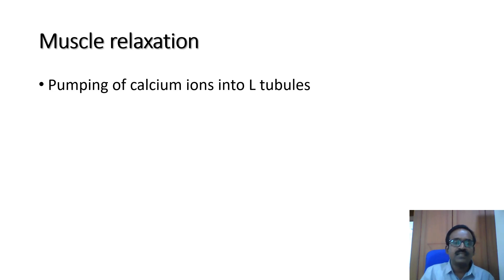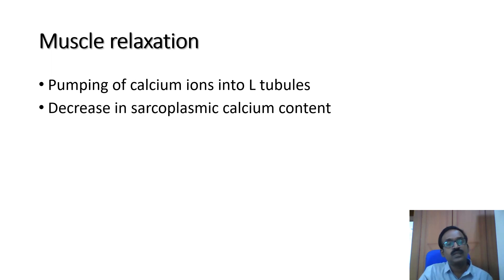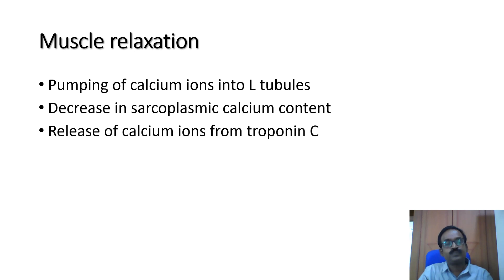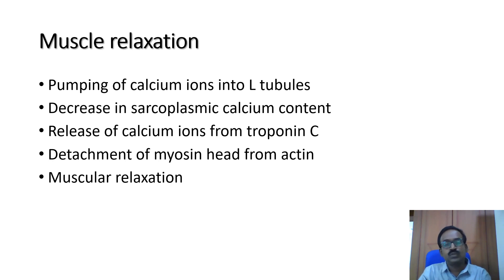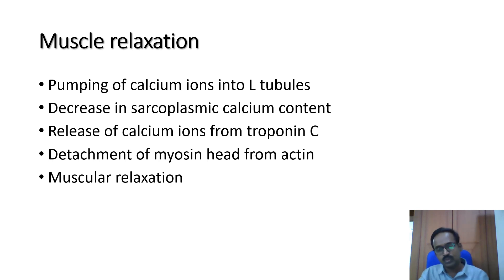During muscle relaxation, calcium ions are pumped back into the L-tubule of the sarcotubular system through the sarcoplasmic endoplasmic reticulum calcium pump. This decreases the sarcoplasmic calcium content. Calcium ions are released from troponin C, the myosin head detaches from the actin, and muscle relaxation occurs. ATP must also bind with the myosin head during this process.